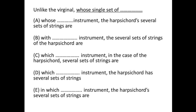Hi, my name is Mandip. In this question, we'll use the elimination process to find the answer. If you look at the part before the underlined question, it says 'unlike.' We use 'unlike' to compare two things, so there must be parallelism. The virginal is an instrument, so 'instrument' must be parallel to another instrument.